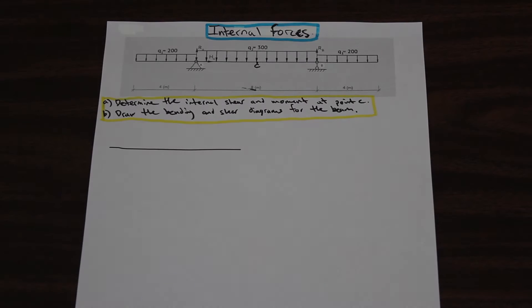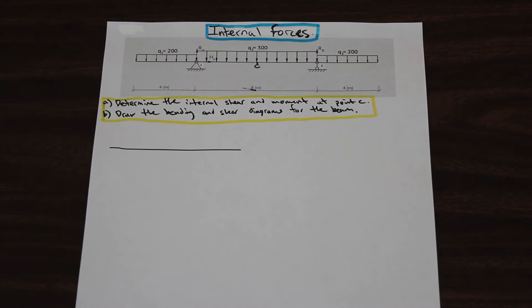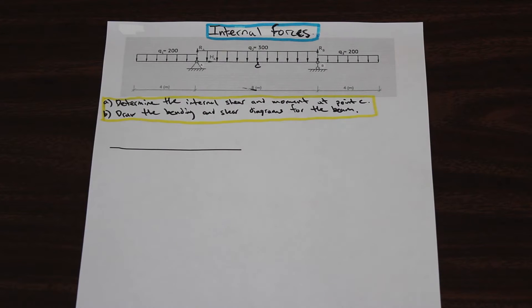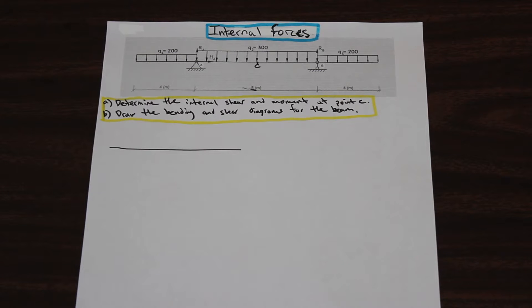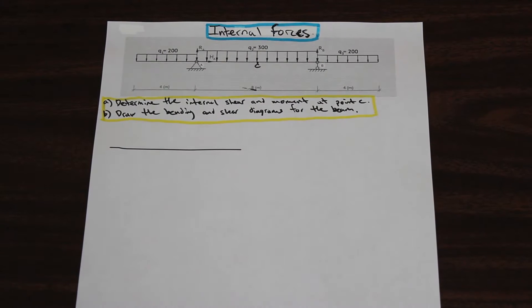Hello everyone, welcome back. Fred here, AF Math and Engineering. We are going to do a question to help prepare you for your midterms. We know that at this point in the semester, for civil engineers, the midterms are coming up for Strengths of Materials 1, or Mechanics of Materials 1, so there are going to be some bending moment diagram questions.